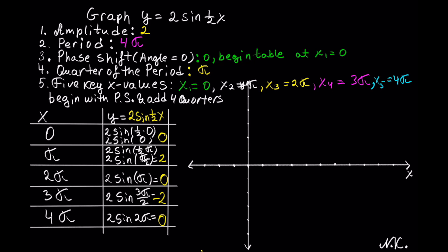Once you have the table, you can graph it on the x and y-axis. Our x points are 0, pi, 2 pi, 3 pi, and 4 pi. The amplitude is 2, so the highest point will be 2 and the lowest point will be negative 2. Now we can plot the points: when x is 0, y is 0; when x is pi, y goes to the coefficient of 2; then back to 0 at 2 pi; then to negative 2 at 3 pi; and back to 0 at 4 pi.